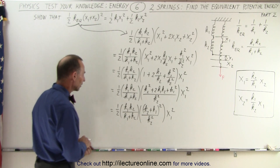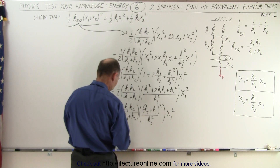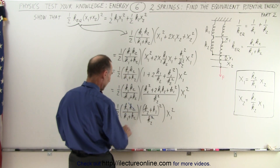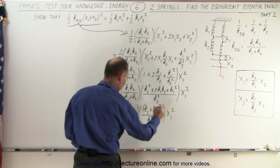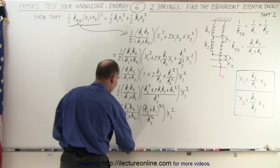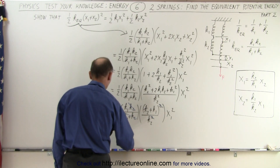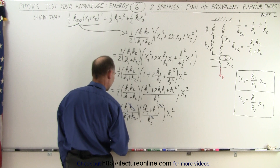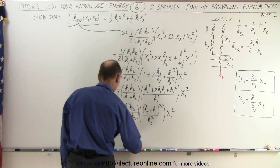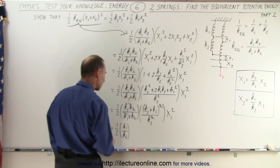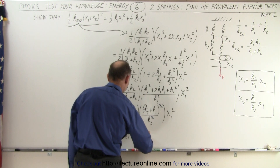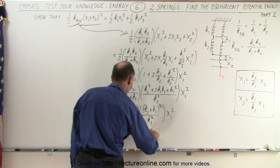Now we cancel terms: this k2 cancels with one of those in k2 squared, and (k1 plus k2) cancels with (k1 plus k2) in the denominator. After simplification, we're left with one-half times k1 divided by k2 times the quantity (k1 plus k2) times x1 squared.